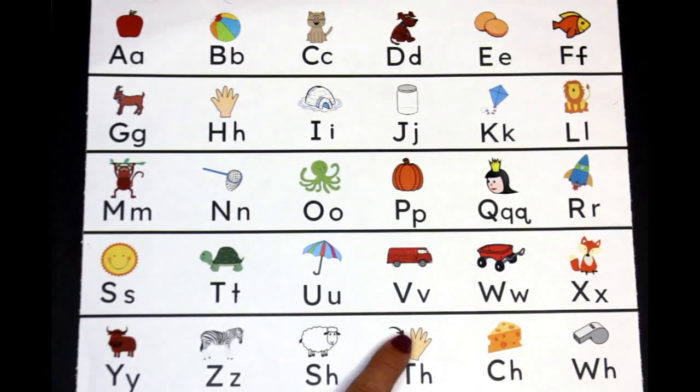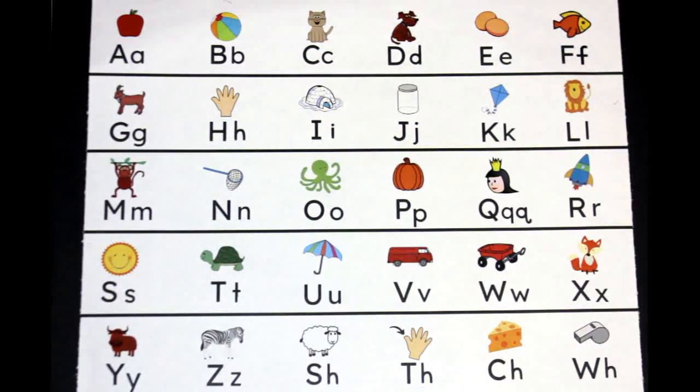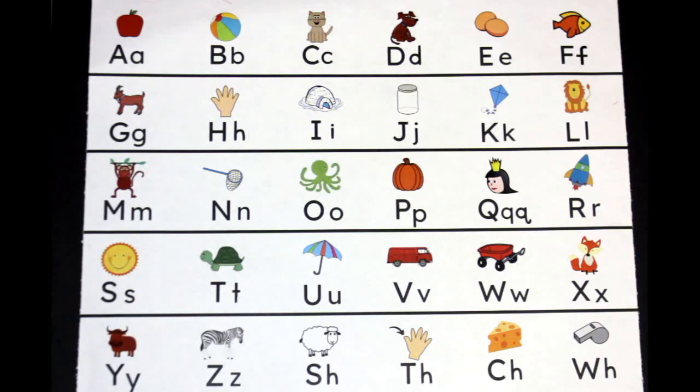Th-th-thumb, Ch-ch-cheese, and Wh-wh-whistle. When we learn these letter sounds, we'll be ready to read and write.